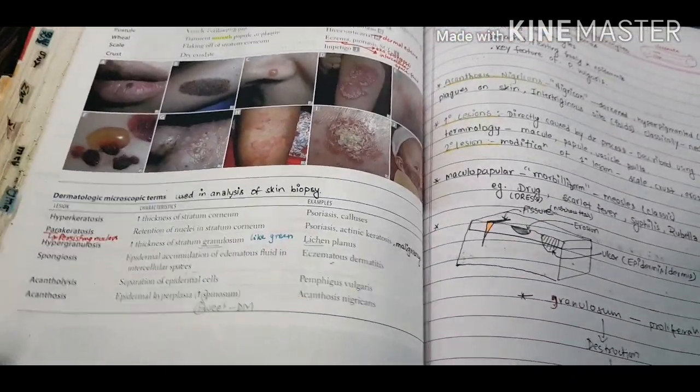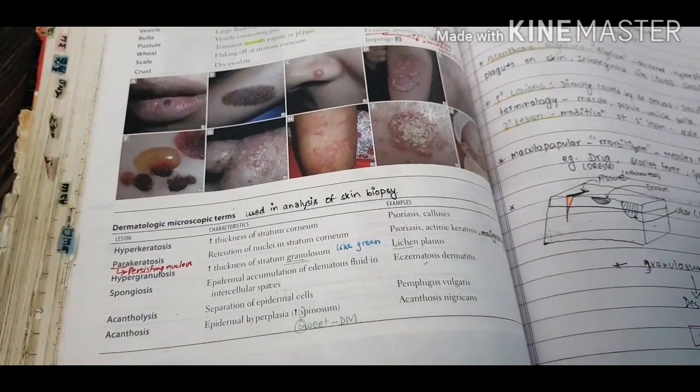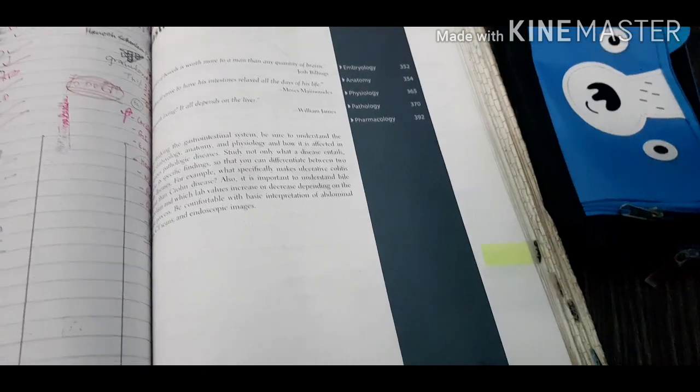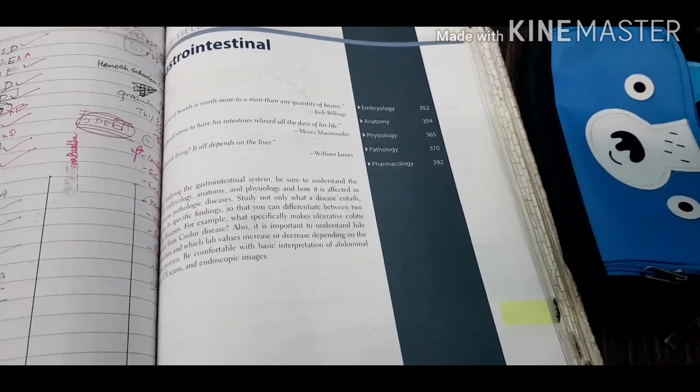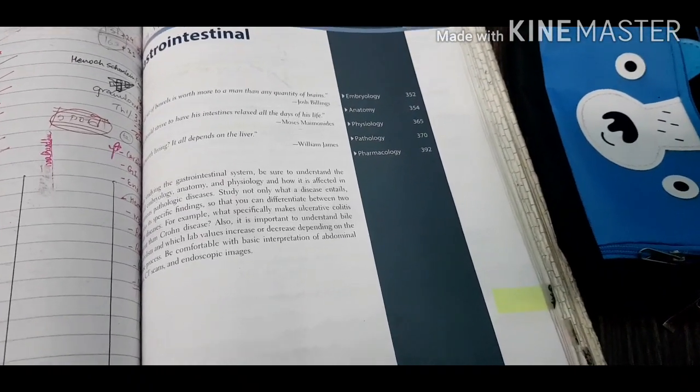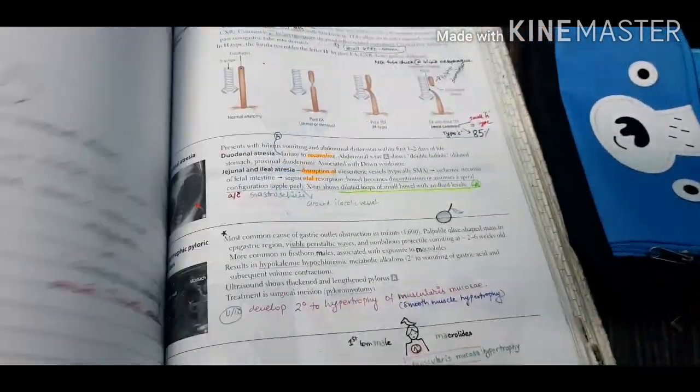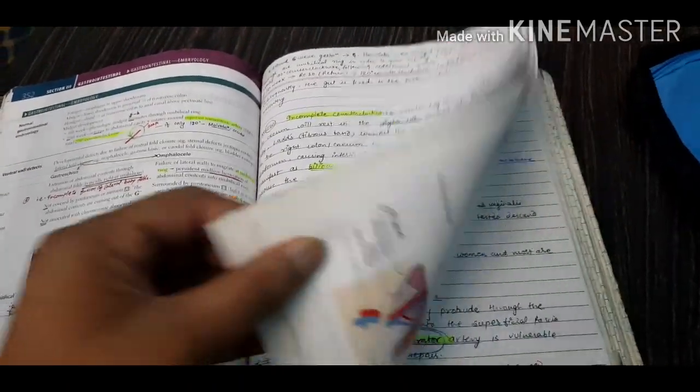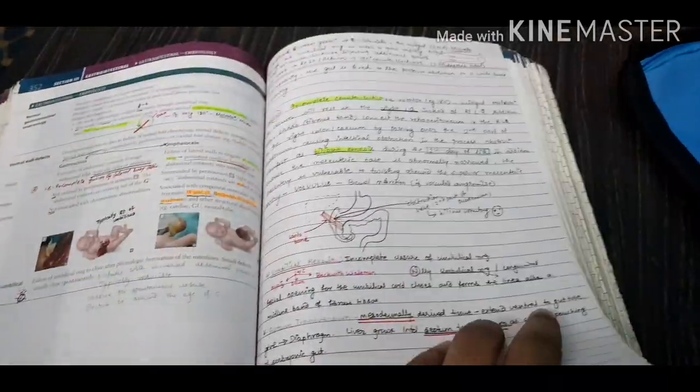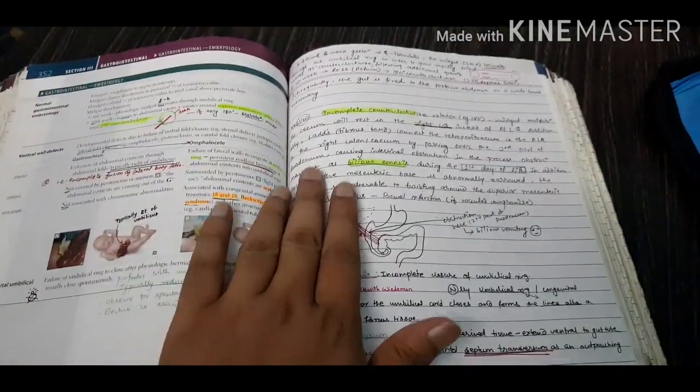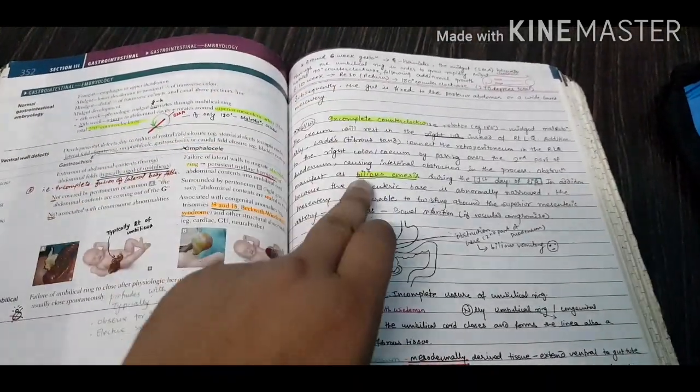In the very beginning of the preparation, I knew I would have to add a lot of information from different resources like UWorld. So I purposefully added a lucid page in between all the First Aid pages. You can see here I've added this page, and this is for the whole book. I added a lucid page after each page, and what I would do is add information relevant to the page on the corresponding side.